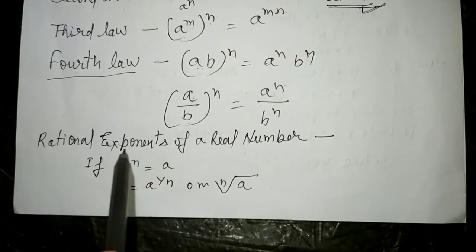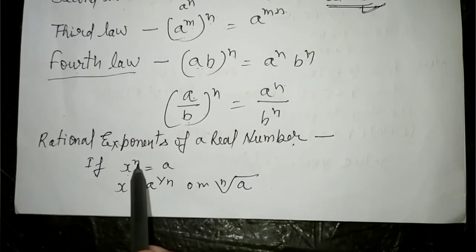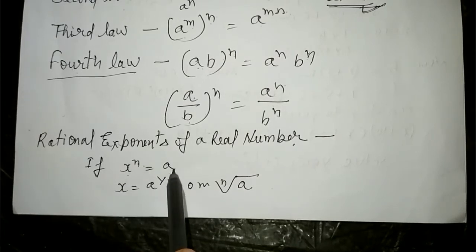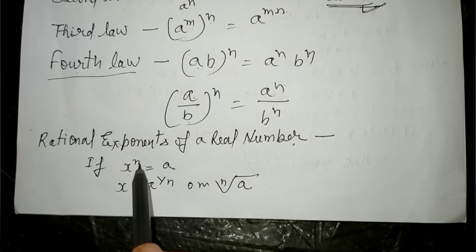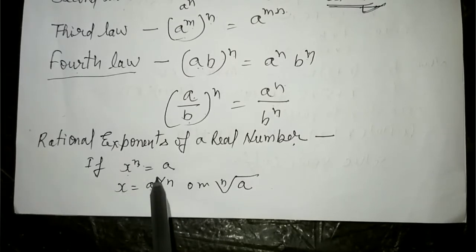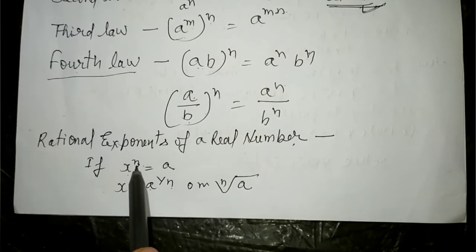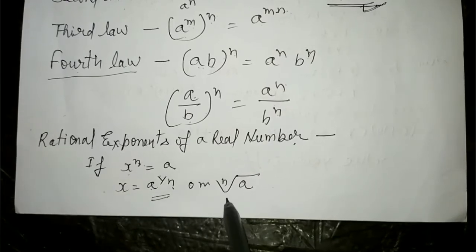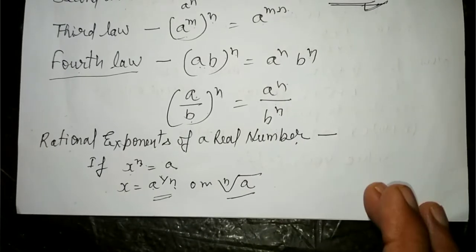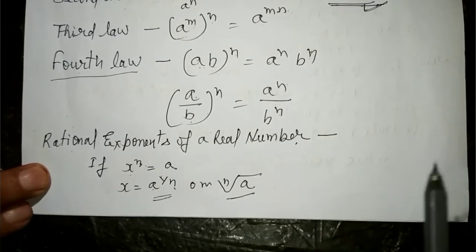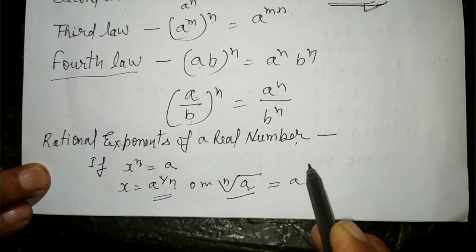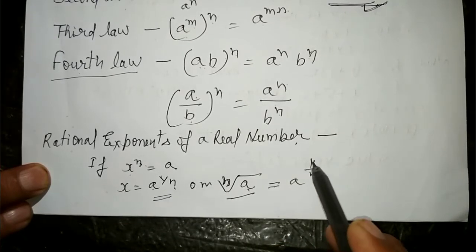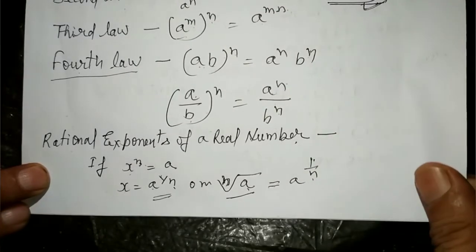Rational exponents of a real number: if x to the power n is equal to a, तो यहाँ से power replace करेंगे — a to the power one upon n हो जाएगा। इसको दूसरे form में nth root of a लिख लेंगे। जो root में number लिखा होता है उसको power में one upon n करके लिखते हैं।